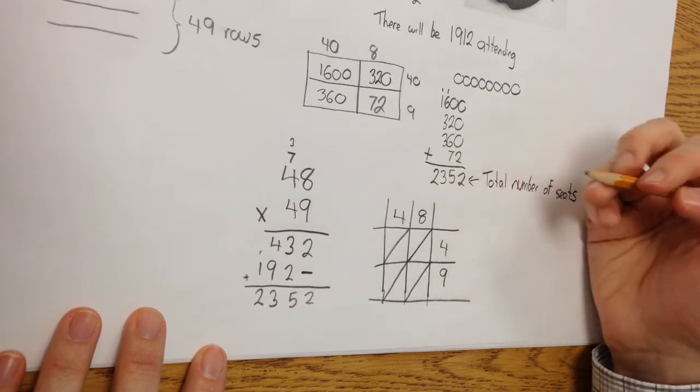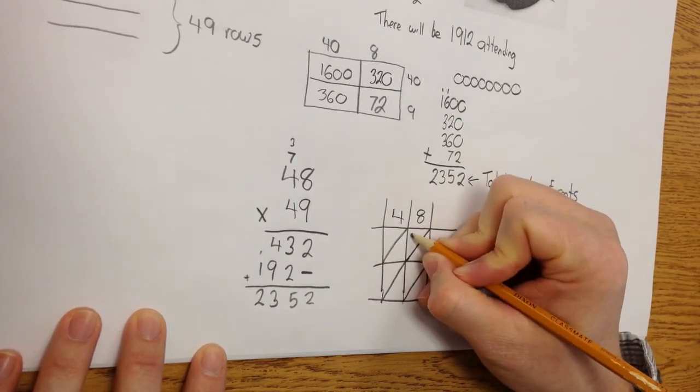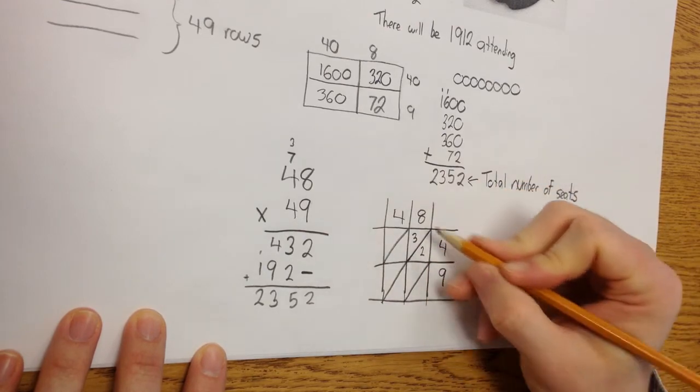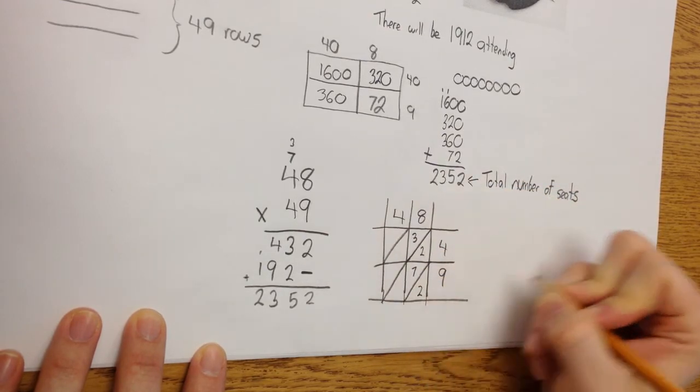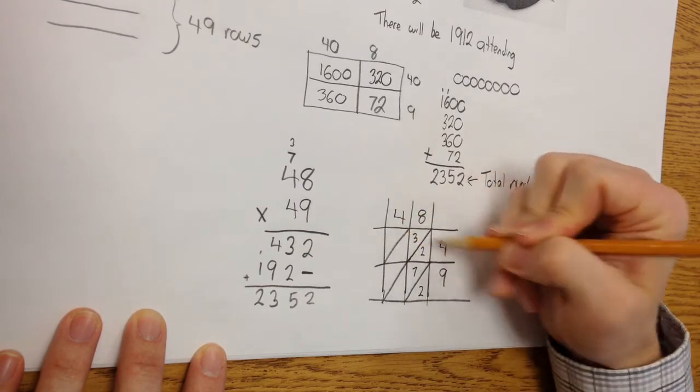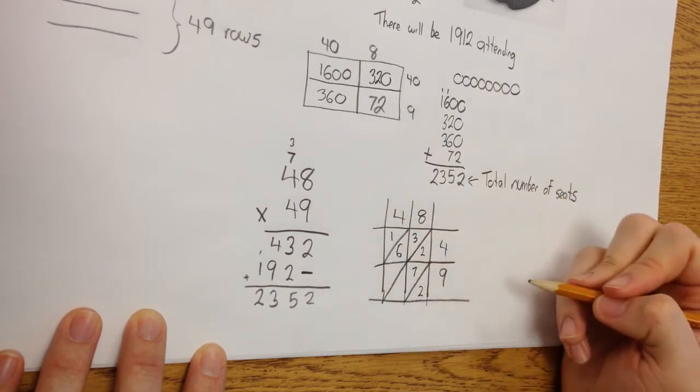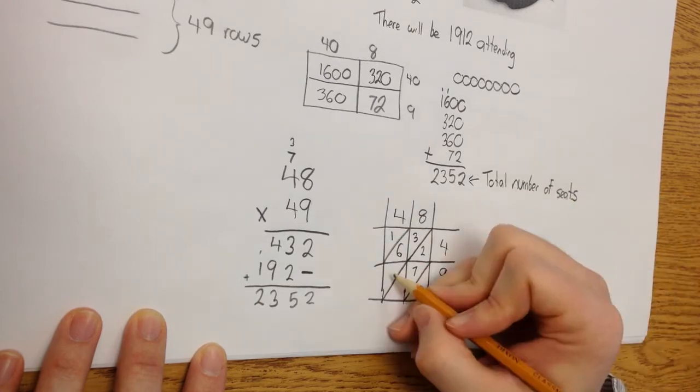And I can start here. 8 times 4, talked about that before, is 32. 3, which is in the tens column, goes up here. 2. And I'm going to do 8 times 9, which is 72. Move here. 4 times 4 is 16. And down here, 4 times 9. Well, we know again that that's 36.